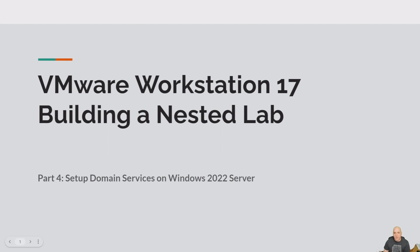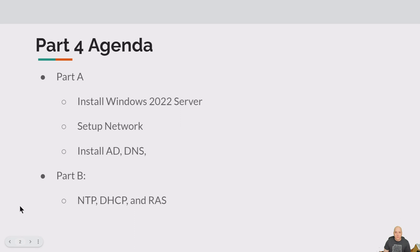Welcome back to building a nested lab with Workstation 17. This is part four, and we're doing domain services on Windows 2022 Server. We're actually in part B now — we've completed part A and we're going to complete NTP, DHCP, and RRAS on that server to wrap up this particular part.